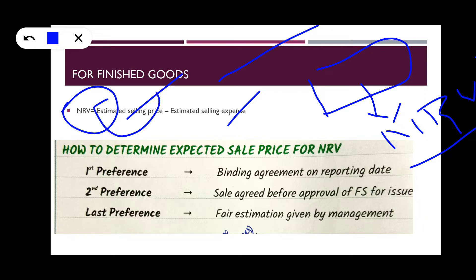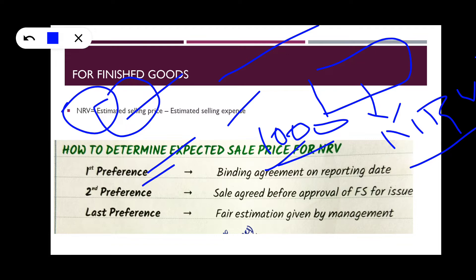How do we determine the estimated selling price? The first preference is if there is already an agreement. For example, someone already agreed to purchase the inventory at 1000, so 1000 is the estimated selling price. If no one has agreed, but a sale is agreed before the approval of the financial statements, that price is used.